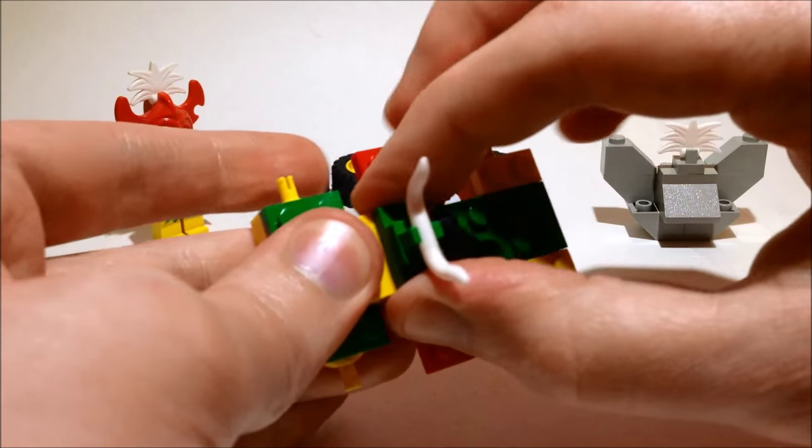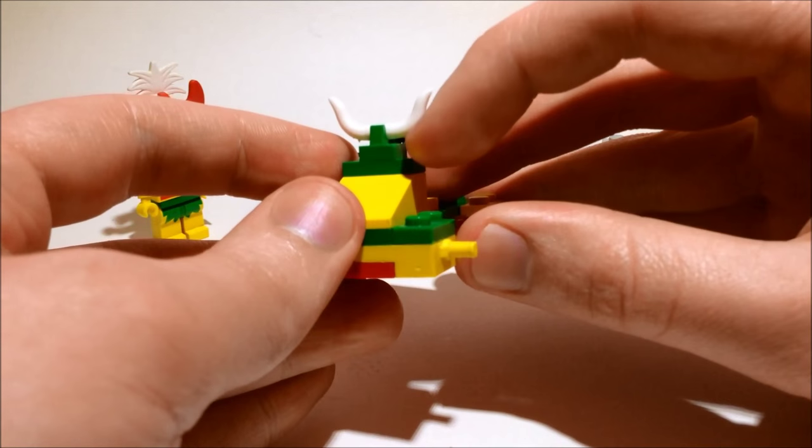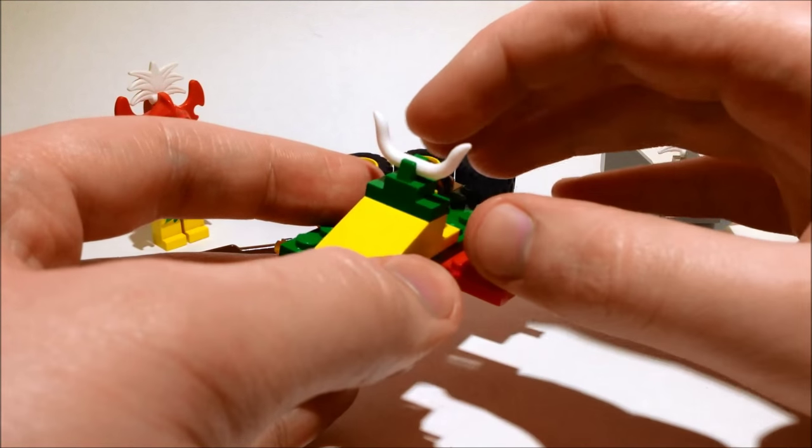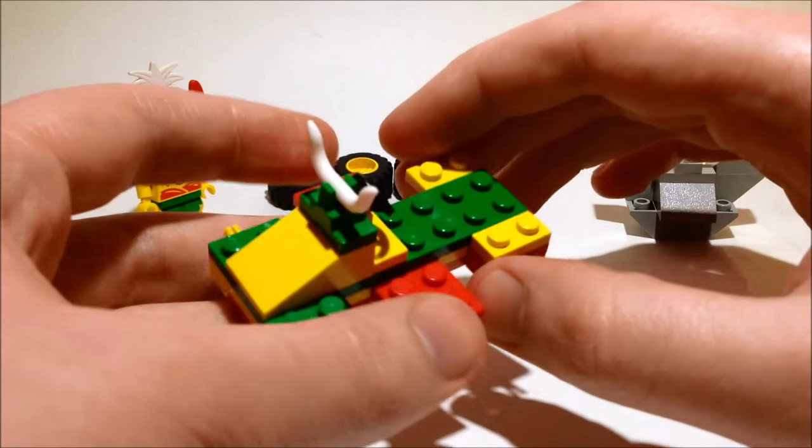Get a 2x3 yellow slope, put it on the front. We have a green jumper part and a green clip along with the cattle horns.